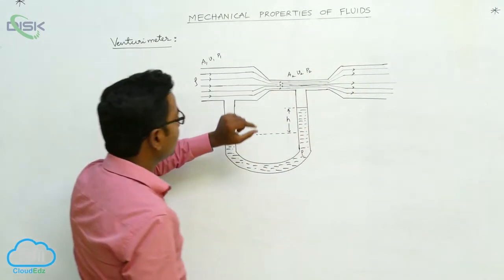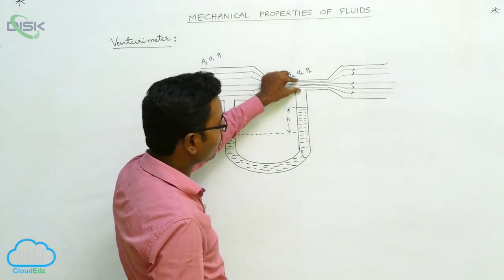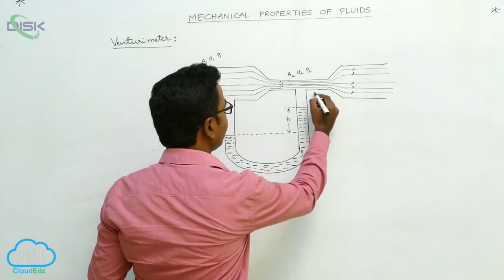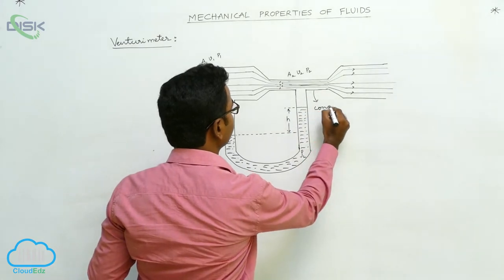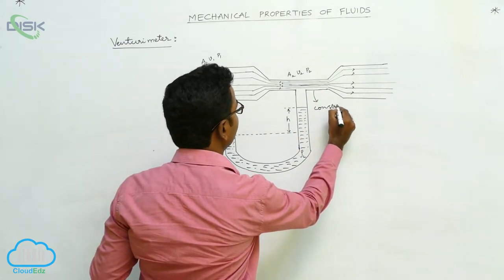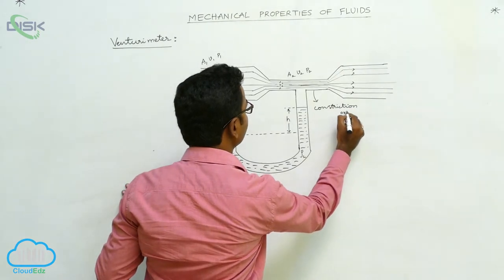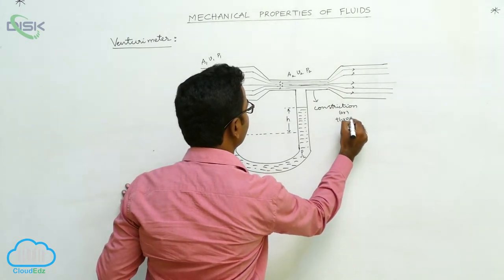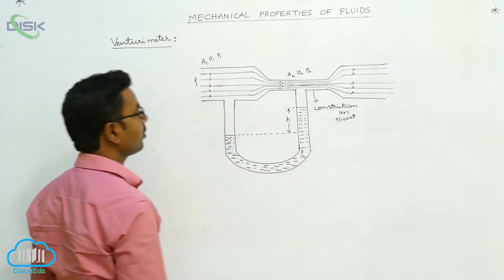The tube of narrow area of cross section is called the constriction, or throat.